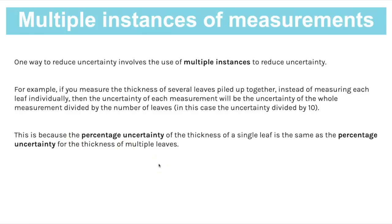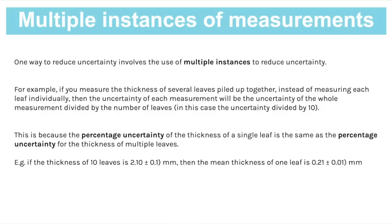This works because the percentage uncertainty of the thickness of a single leaf is the same as the percentage uncertainty for multiple leaves. So if the thickness of 10 leaves was 2.10mm with an uncertainty of 0.1mm, the mean thickness of one leaf is 2.10 ÷ 10 = 0.21mm, and you can also divide the uncertainty by 10, giving an uncertainty of 0.01mm. That's how measuring multiple instances at the same time reduces uncertainty by a factor of 10.